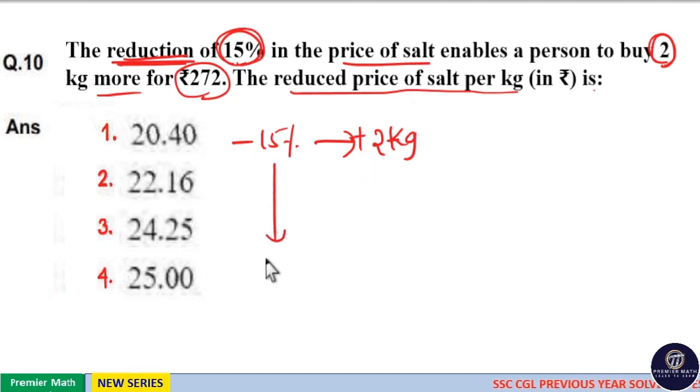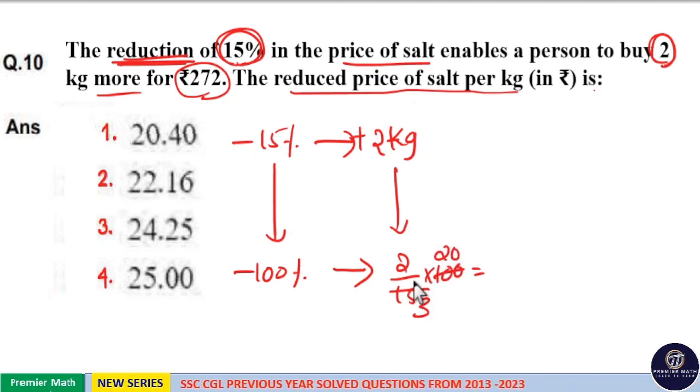Now if I reduce it to 100%, that is 100% reduction leads to 2 by 15 into 100 quantity. That is 5 goes 3 times in 15, 5 goes 20 times in 100, which equals 40 by 3 kilogram. This 100 percentage reduction means 40 by 3 kilogram.